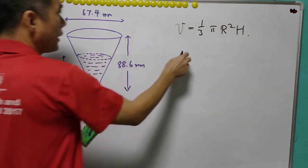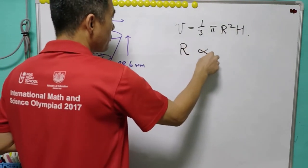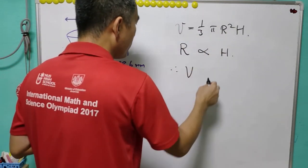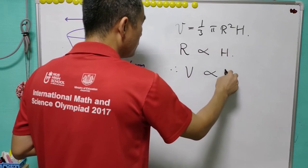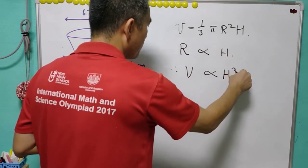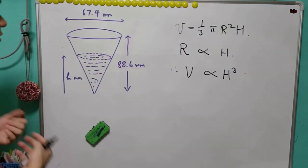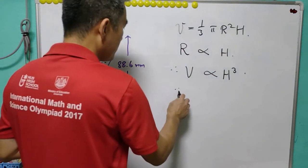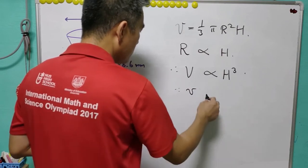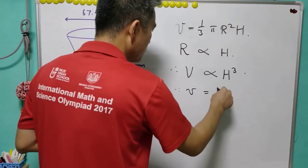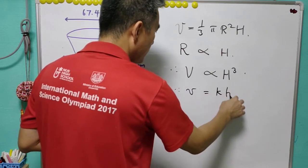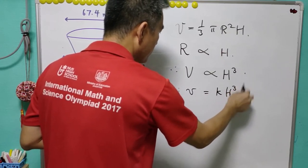And we know that r is proportional to h. From here we know that the volume is proportional to h to the power 3. And we can say that in short v is equal to a constant k times h to the power 3.